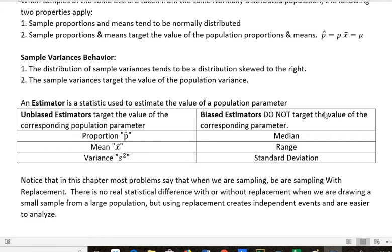Biased estimators do not target the value of the corresponding parameter. So median, range, and standard deviation are not reliable measures to use as a statistic to estimate the value of a population because they don't target the actual values.